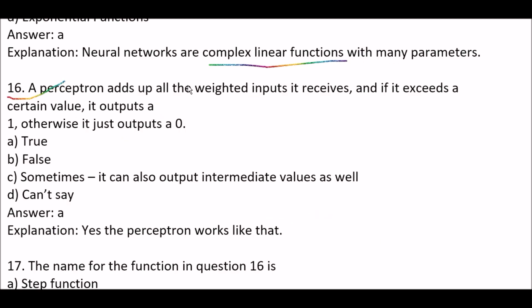Next question: a perceptron adds up all the weighted inputs it receives, and if it exceeds a certain value, it outputs a 1; otherwise it outputs a 0. Is this true or false? Option C: sometimes it can also output intermediate values as well. Option D: can't say. The right answer is option A — true. In a perceptron, it adds up all weighted inputs, and if it exceeds a threshold it outputs 1, otherwise 0. It does not output intermediate values; only 1 or 0.